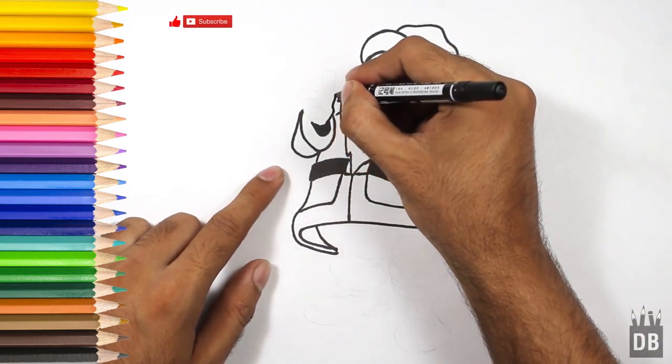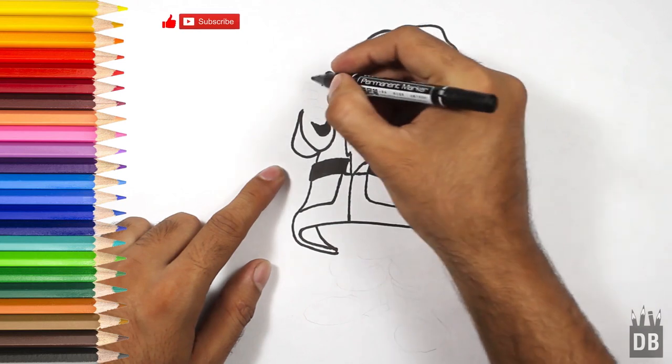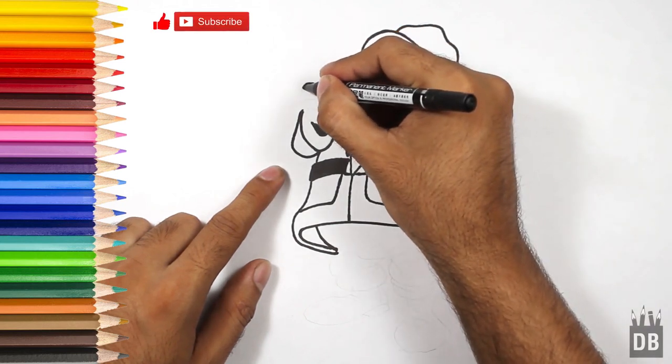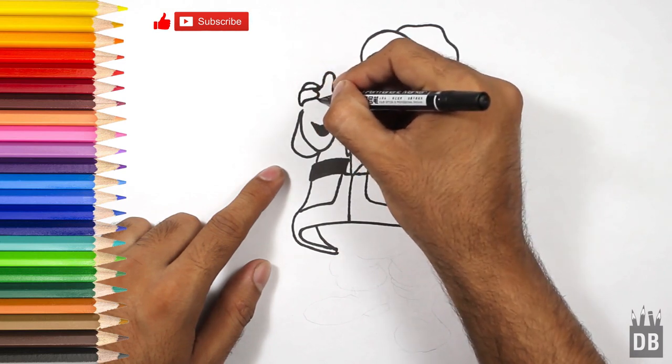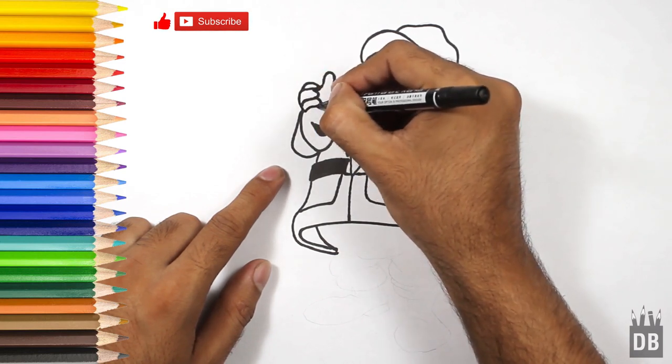There come the hand. This is the thumb, first finger, second, third and fourth one.